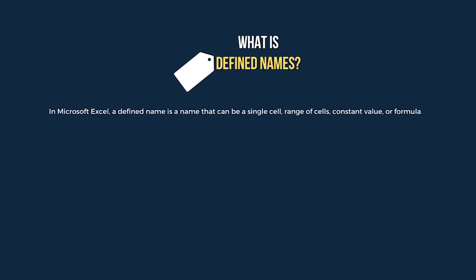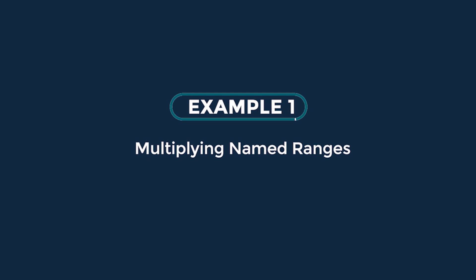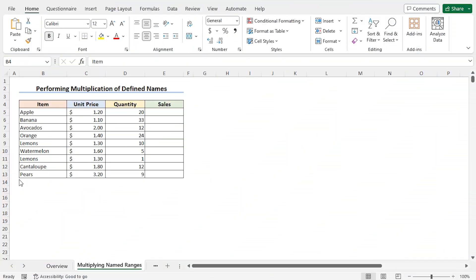In general, a defined name refers to a single cell or a range of cells. You can use the defined name in formulas to perform your calculations related to those cells. You can perform mathematical operations like addition, subtraction, and multiplication using defined names.